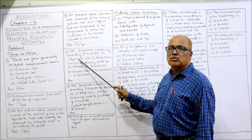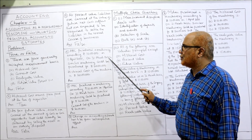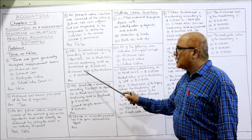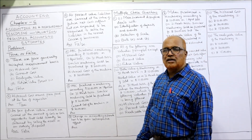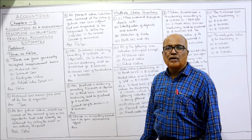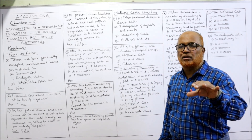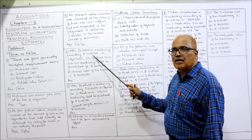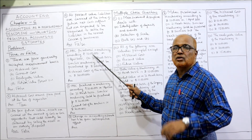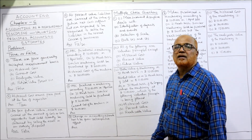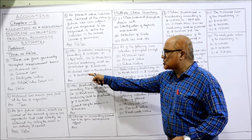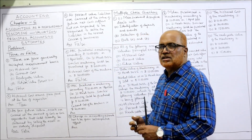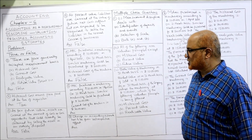Next: ABC purchased machinery amounting to Rs. 10 lakh on 1st April 2001. On 31st March 2022, a similar machinery could be purchased for Rs. 20 lakh — and this is stated as the current cost. The statement then says 'historical cost of the machine is 20 lakh' — this is FALSE. Historical cost is the cost at which the asset was acquired, which is Rs. 10 lakh. The Rs. 20 lakh is the current cost, not the historical cost.